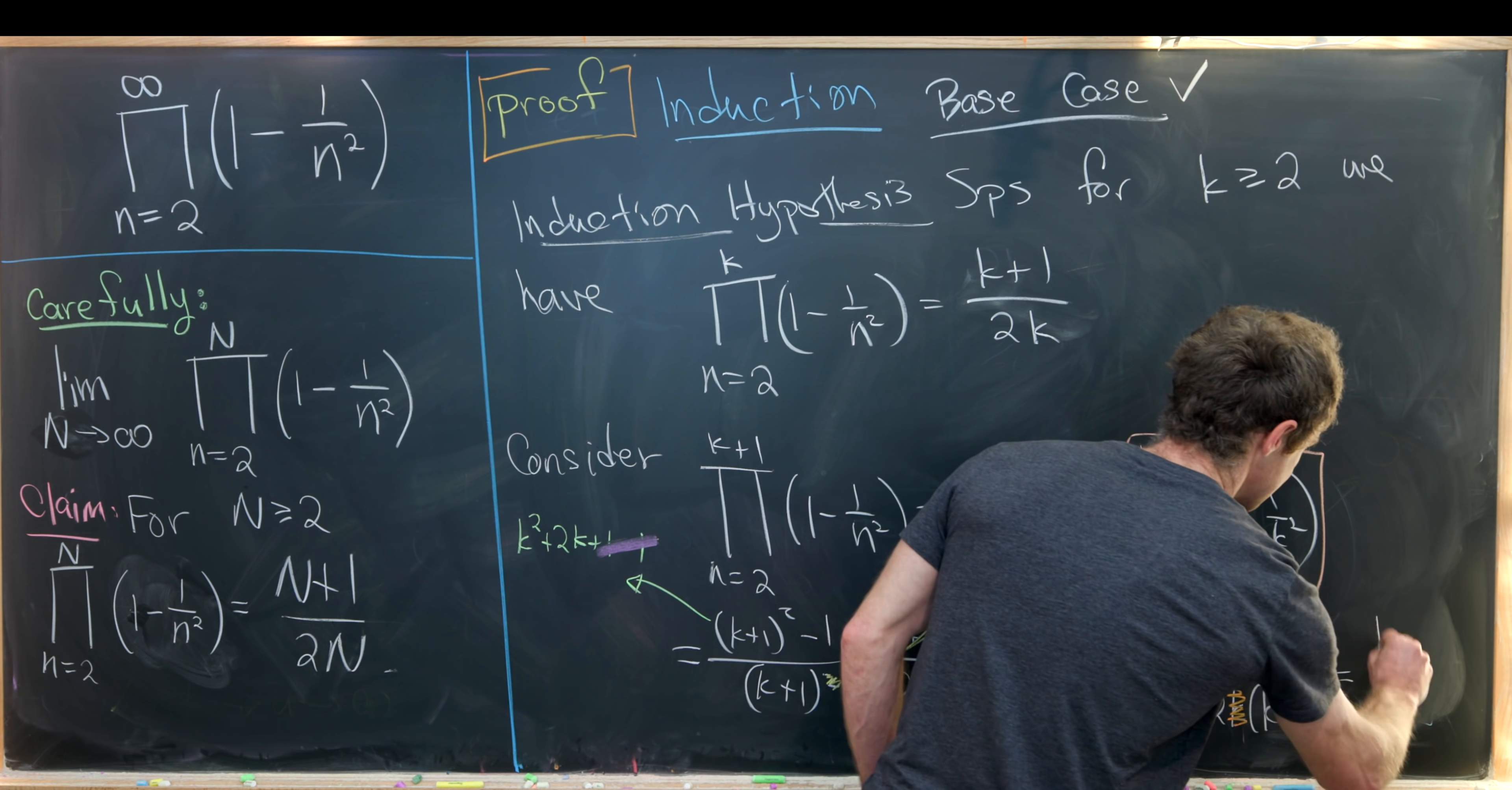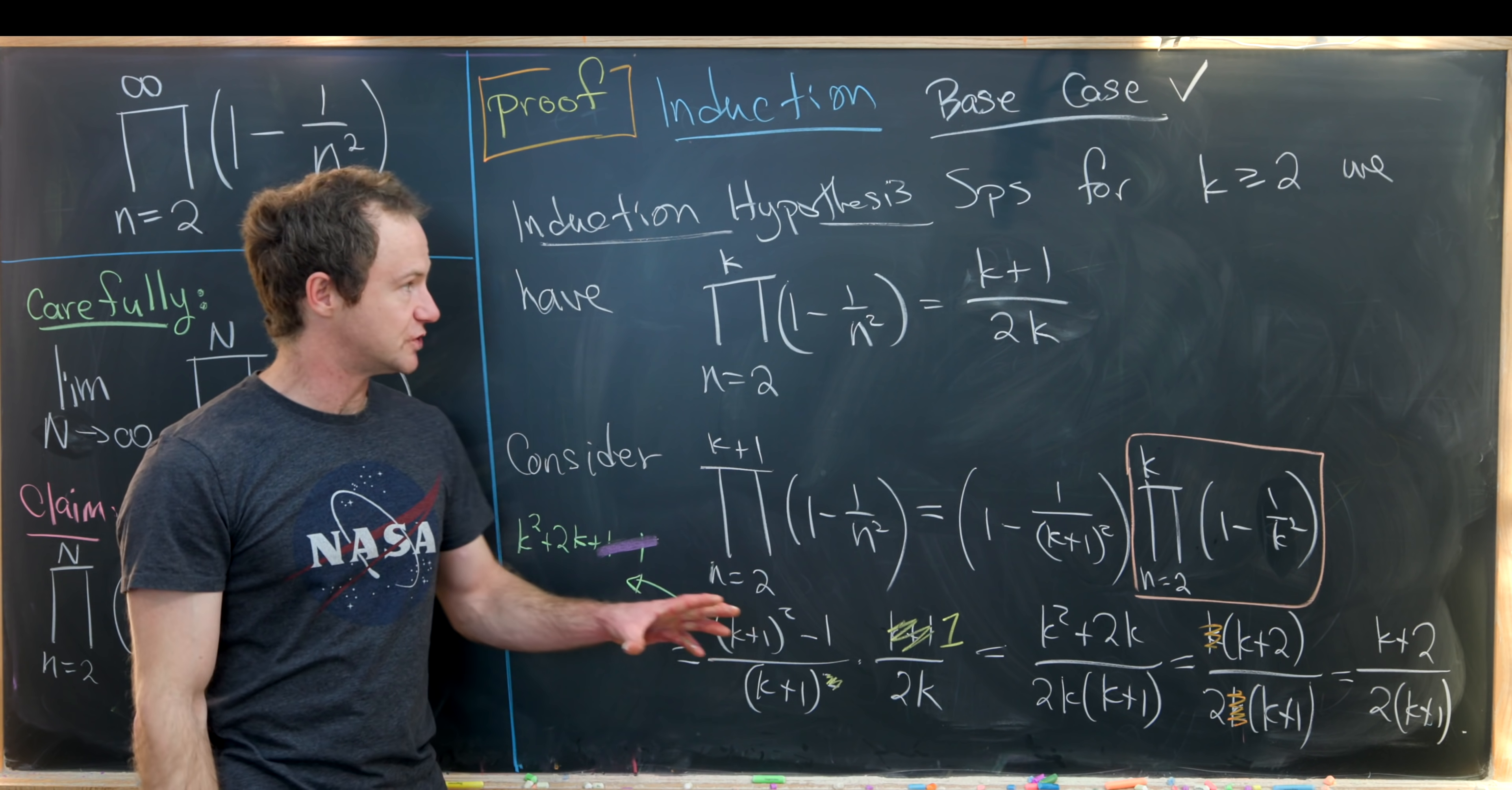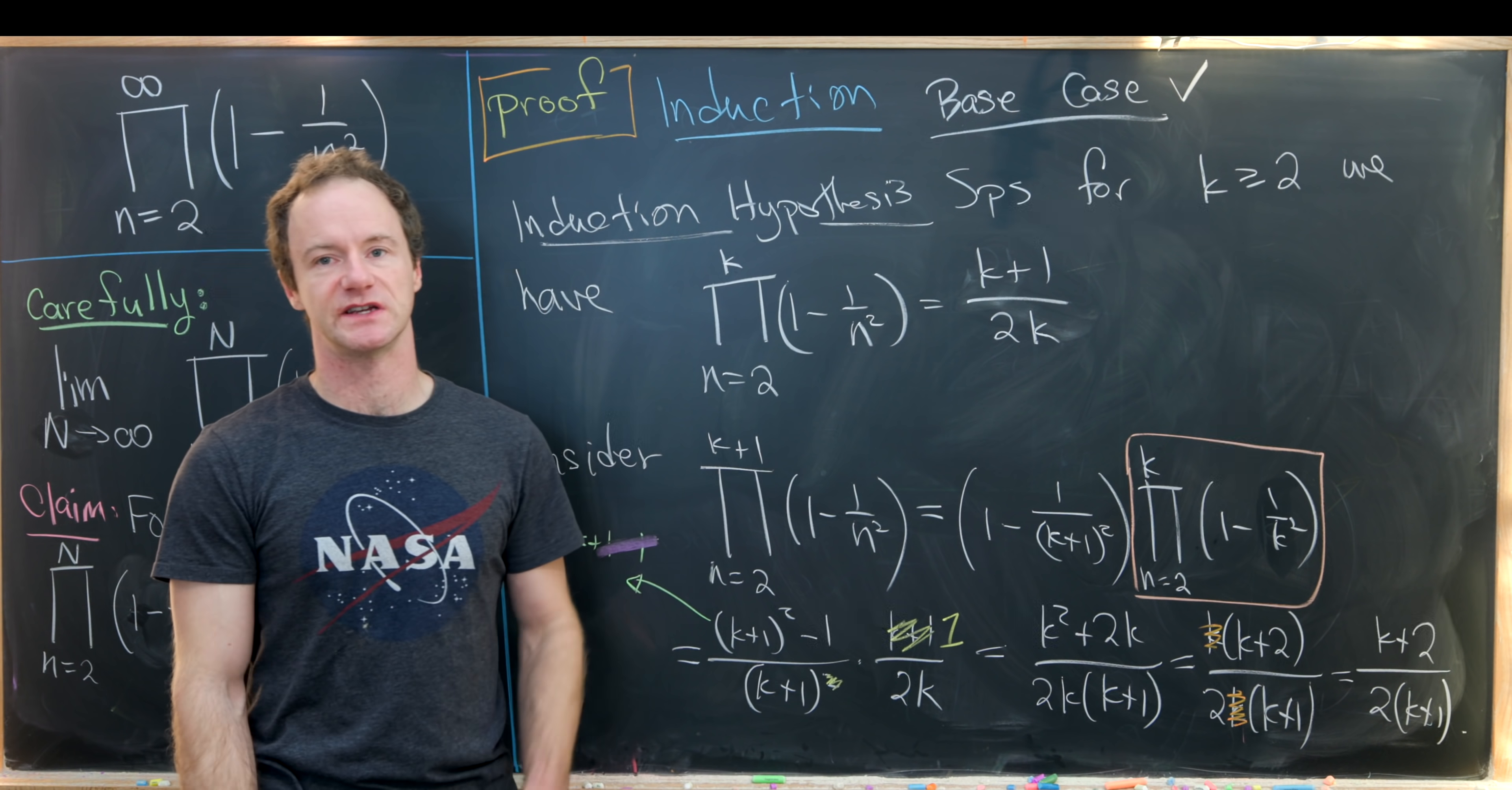We can finally cancel this k with this k. And that leaves us with k plus 2 over 2 times k plus 1, which is the form that we wanted to achieve to prove our closed formula for this nth partial product using induction.